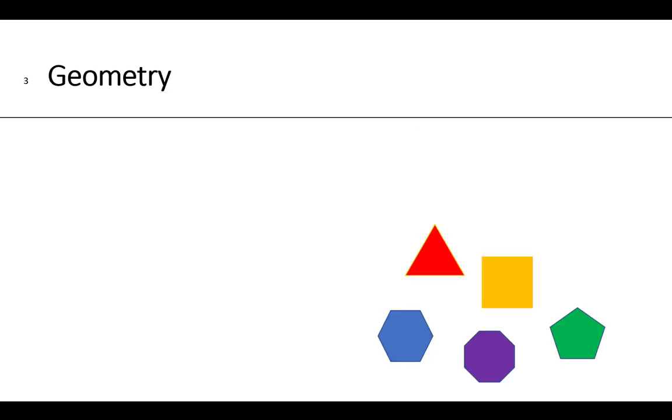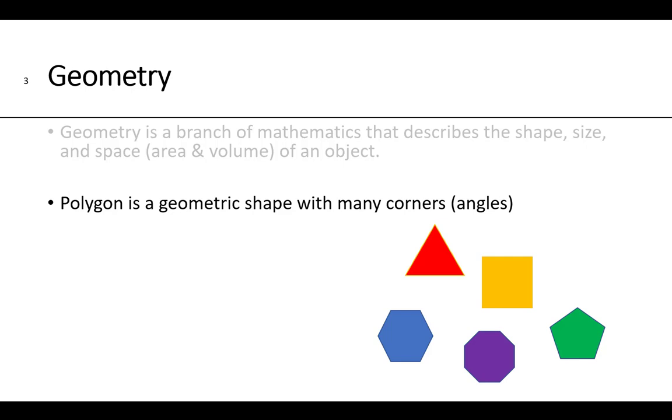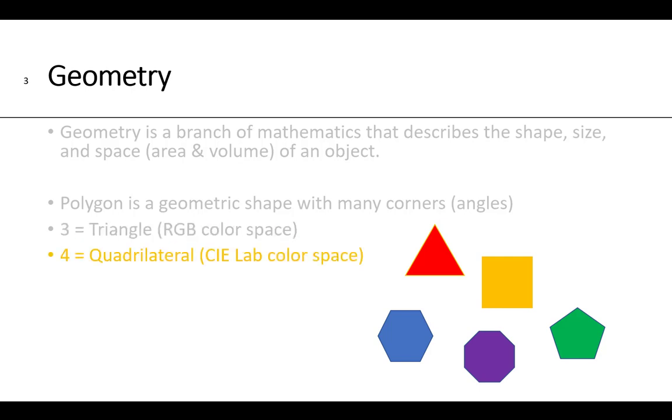One branch of mathematics is geometry, and geometry describes the shape, the size, and the space of an object. The space would be its area and its volume. A polygon is a geometric shape with many corners or angles. So we have three-sided objects which are triangles, and RGB would have that color space. We have four-sided quadrilaterals, and CIE Lab color space is that. We have five-sided geometric shapes called pentagons. Six-sided shapes are called hexagons, and this would be the CMY color space, and an eight-sided object would be called an octagon.